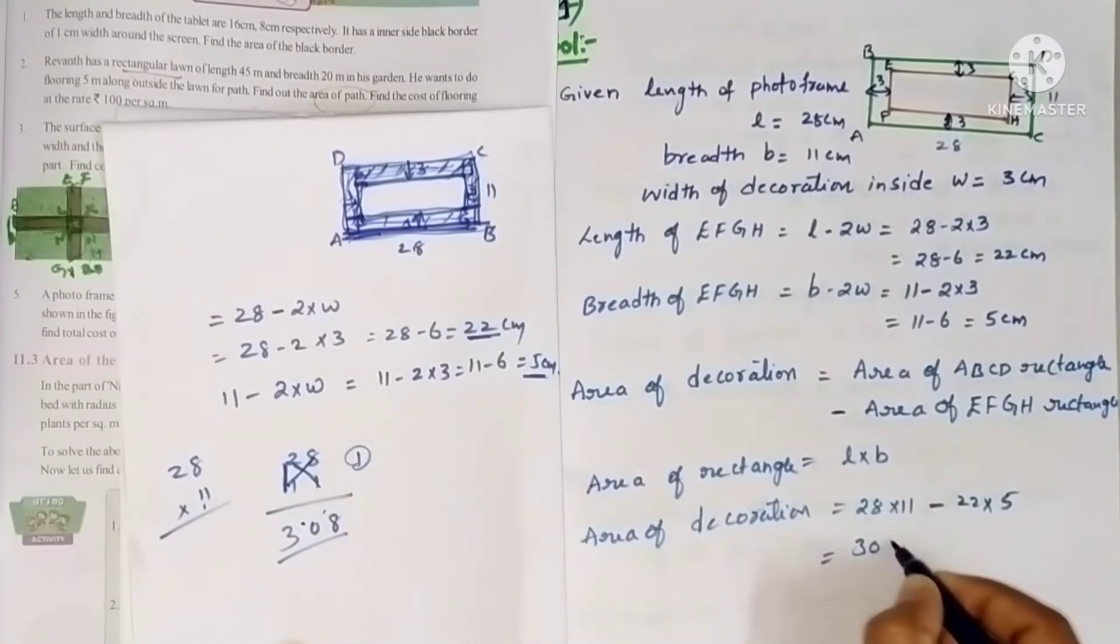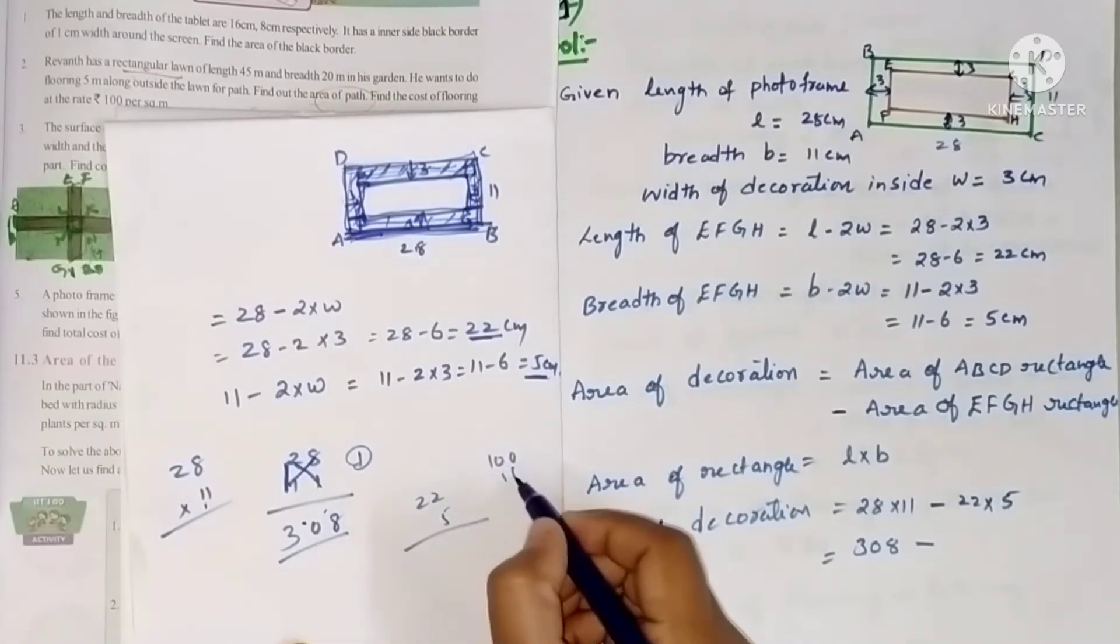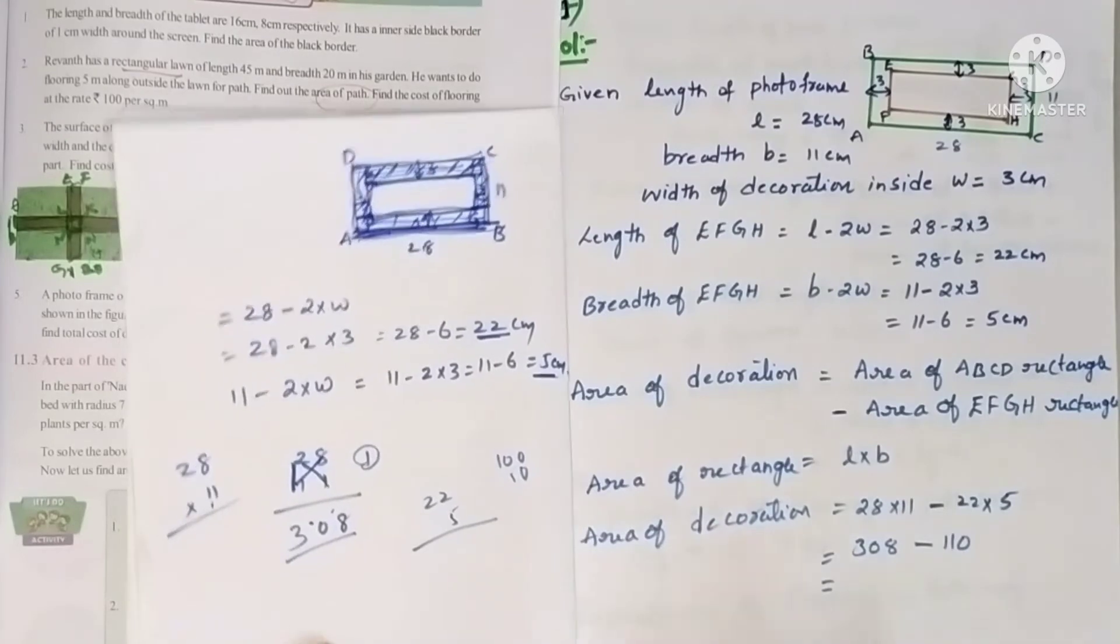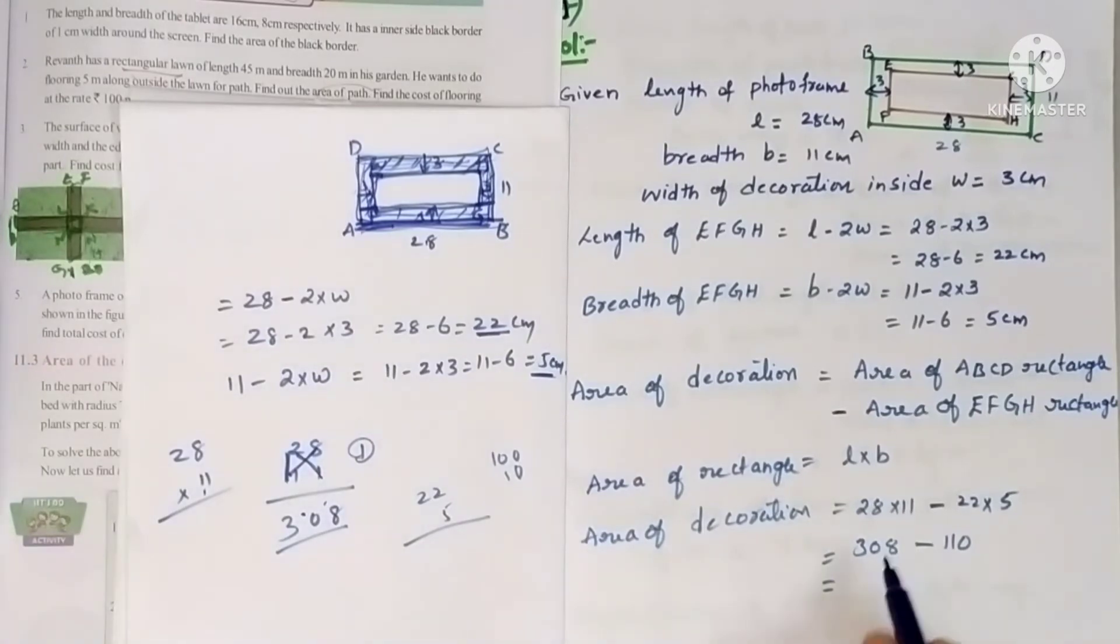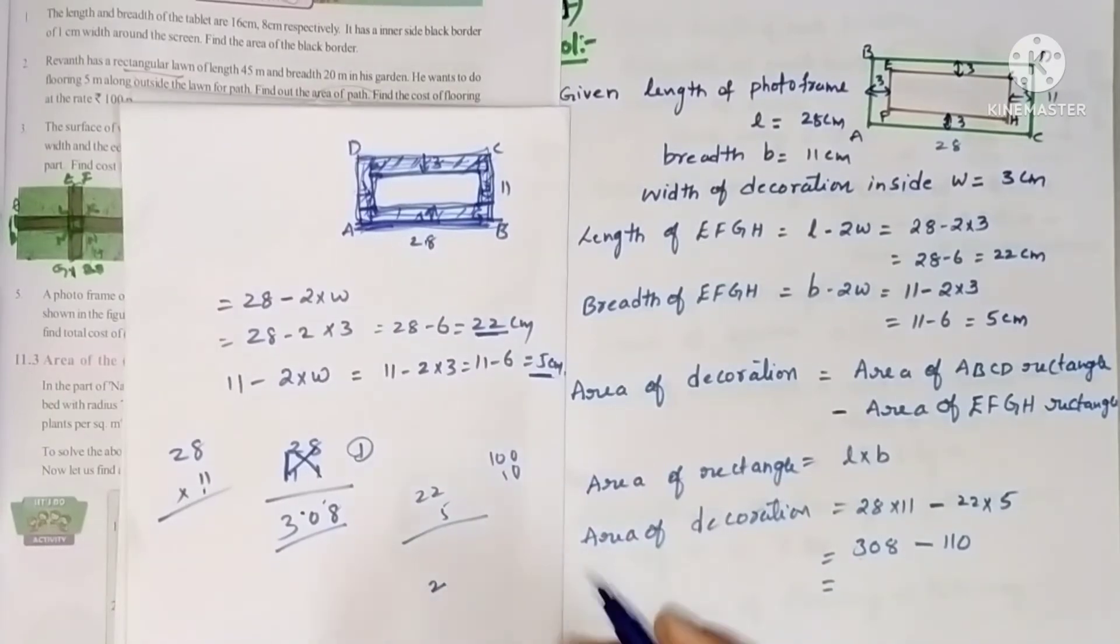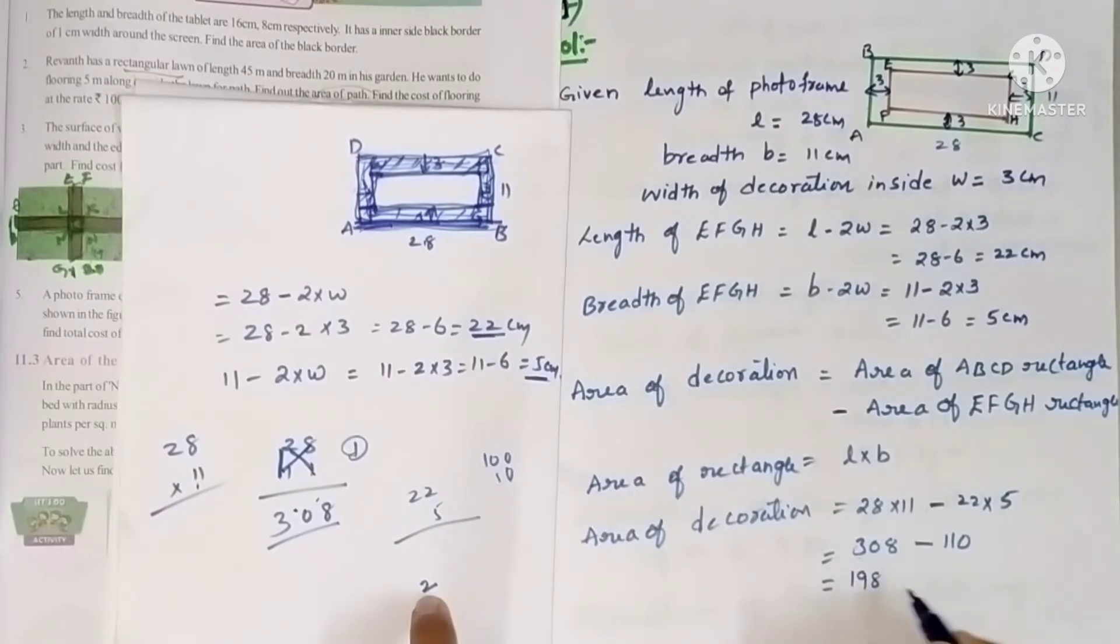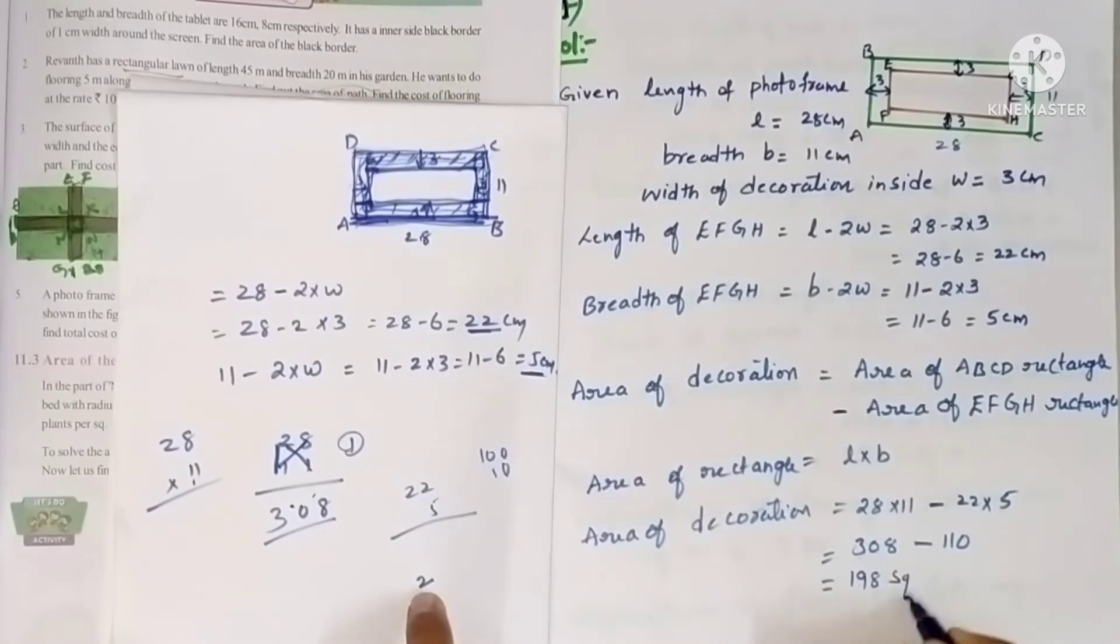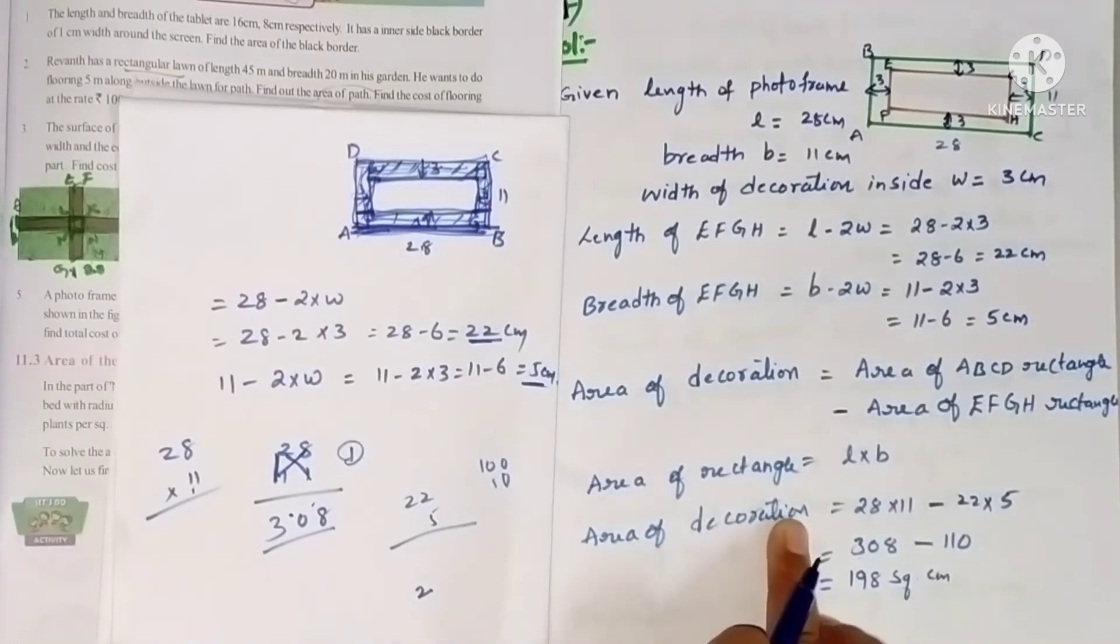So it is 308 minus 22 fives. 2 fives are 10, 2 fives are 10. So it is 110. After subtracting you will get... See here 308 is there and here 110 is there. Students, just assume it is 310 and 2 extra. So 310 minus 110 is 200. 200 minus this extra 2 is 198. 198 square centimeters or centimeter square also. So this is area of decoration.